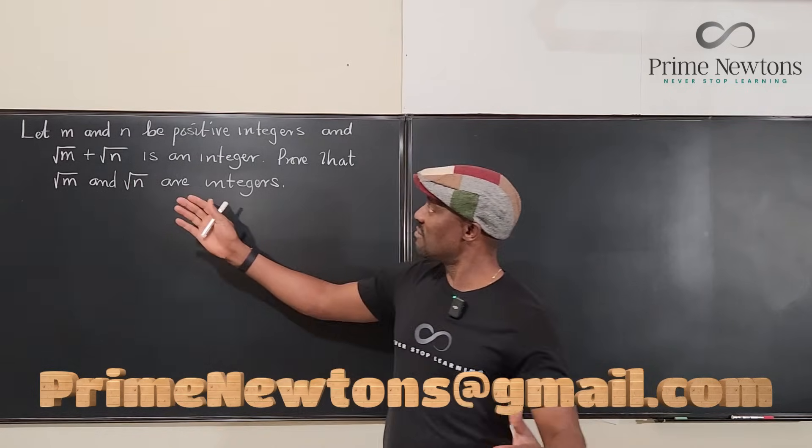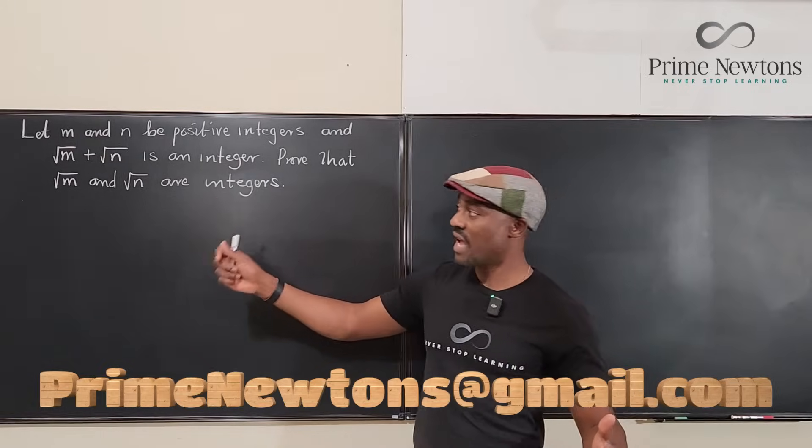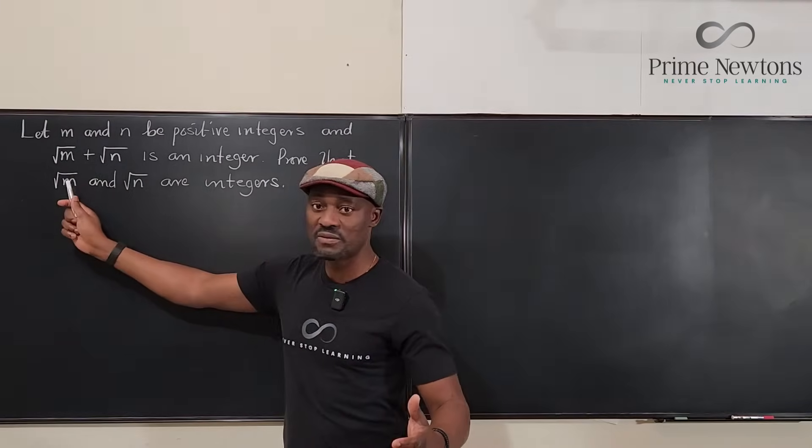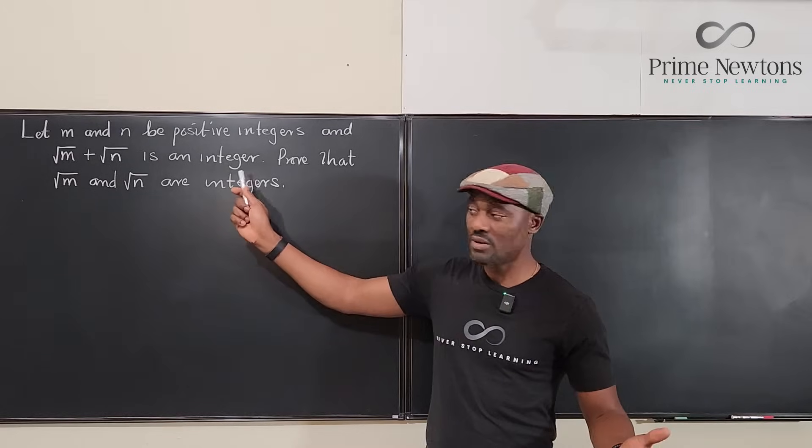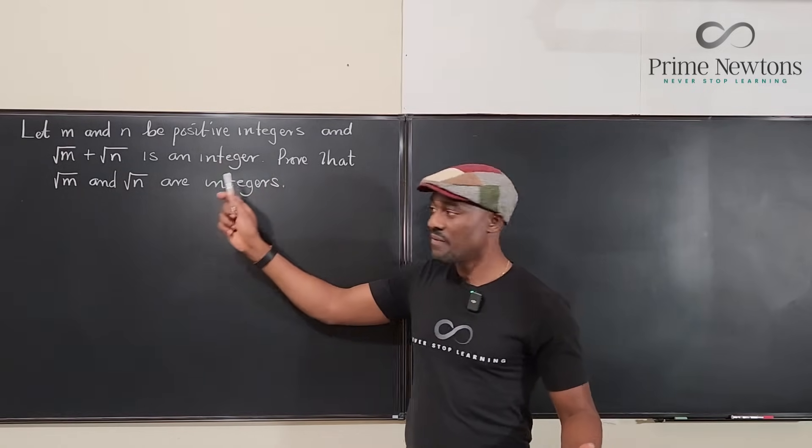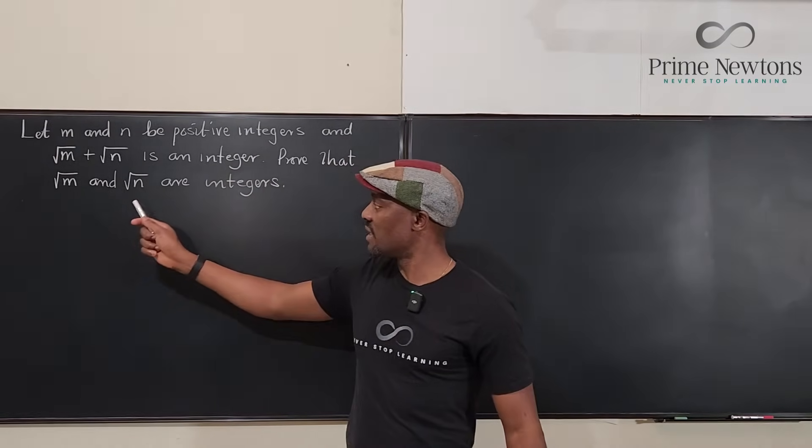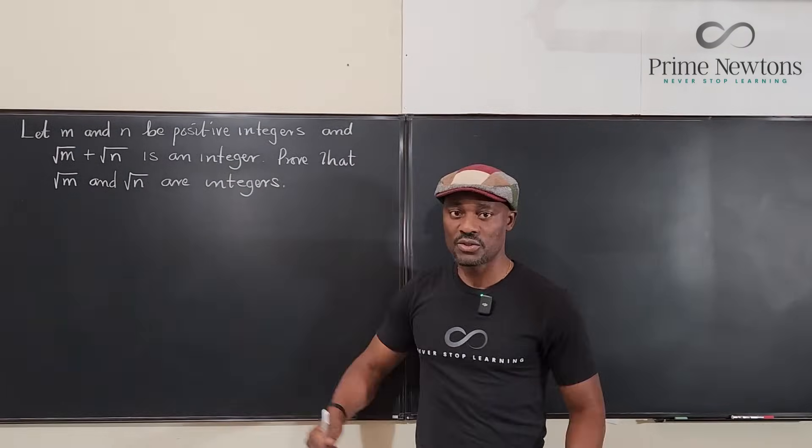Let m and n be positive integers and let the sum of √m and √n be another integer. We need to prove that √m and √n are integers themselves.